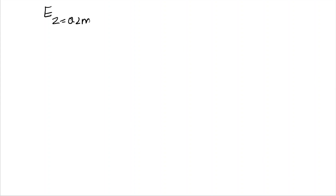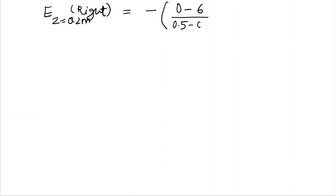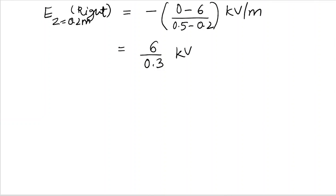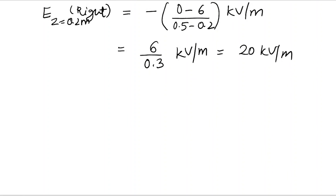Similarly, for the right part, the electric field contribution will be minus of (0 minus 6) over (0.5 minus 0.2) kilovolts per meter, which is 6 over 0.3, equal to 20 kilovolts per meter.